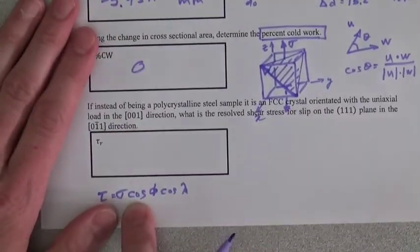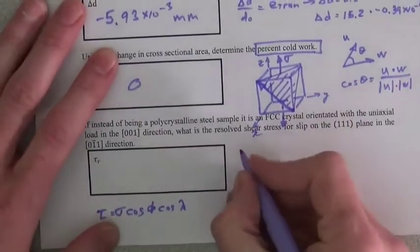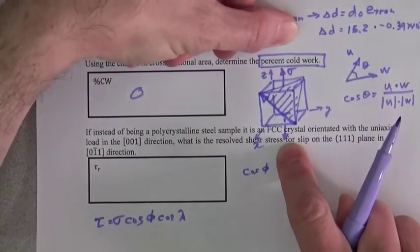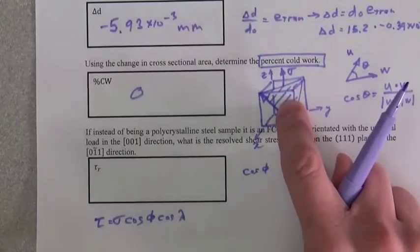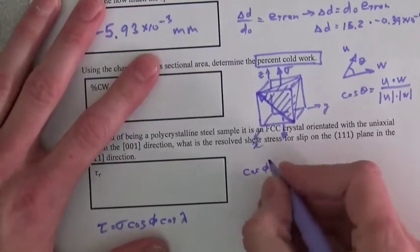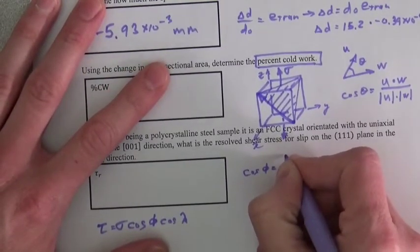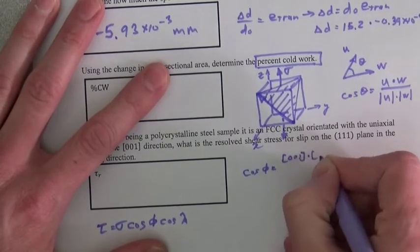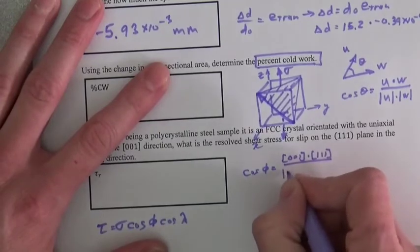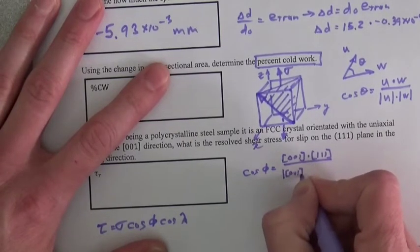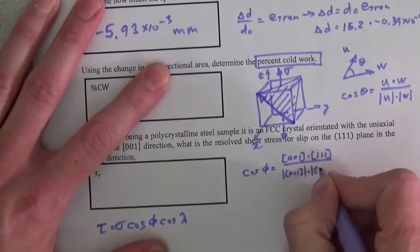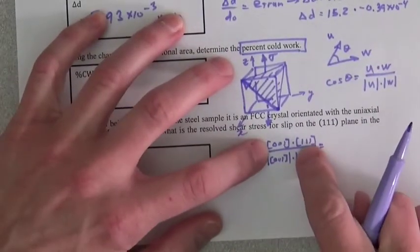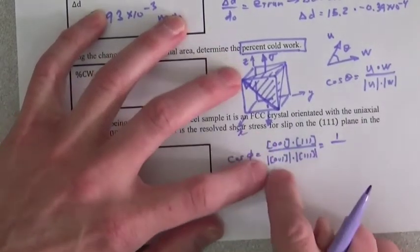So if we want to know the cosine φ, which is the angle between [001] and the normal of the plane (111), we're going to say cosine φ is equal to [001] dotted into the normal direction, which is (111), divided by the magnitude of [001], which is just 1, times the magnitude of (111), which is the square root of 3. So this is equal to 0 plus 0 plus 1 over 1 times the square root of 3.